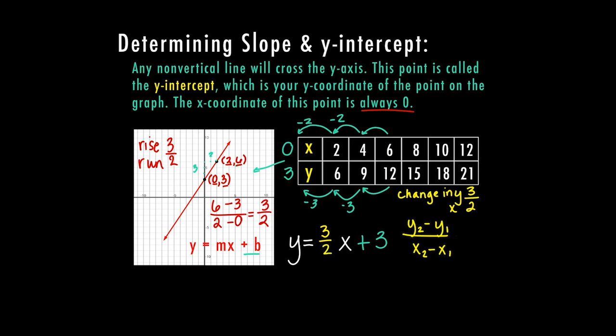So therefore I've determined three different ways that my slope is three over two. So I can do the rise over run by counting on the graph. I can find the change in y over the change in x from my table, or I can use my ordered pairs and plug it into my equation y2 minus y1 over x2 minus x1. And either way, I'm going to end up with the slope for my equation.